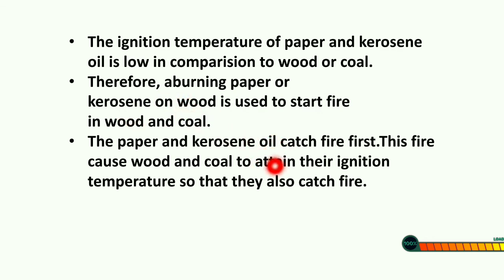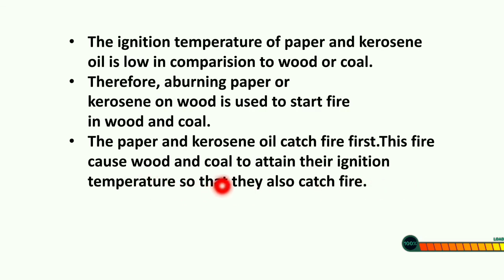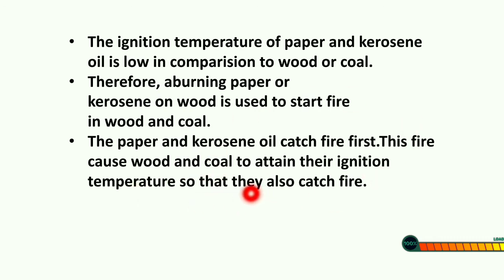The ignition temperature of paper and kerosene oil is low in comparison to wood or coal. Therefore, burning paper or kerosene on wood is used to start a fire in wood and coal — the paper and kerosene catch fire first, and this causes wood and coal to attain their ignition temperature so that they can also catch fire.